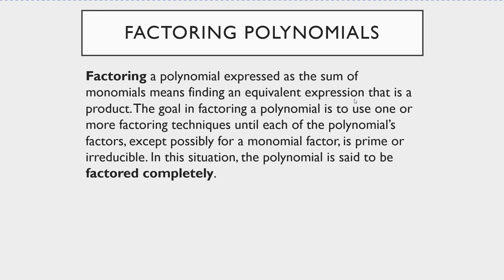So what exactly do I mean by factoring a polynomial? Factoring a polynomial expressed as the sum of monomials means finding an equivalent expression that is a product. Over these lectures I'm going to take a polynomial like x squared plus 5x plus 6 and show you how to rewrite this as an equivalent expression that is a product. It turns out this equals x plus 2 times x plus 3 — you took this polynomial and rewrote it as the product of two much simpler polynomial expressions.